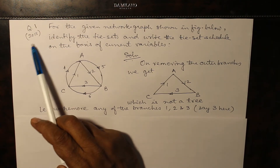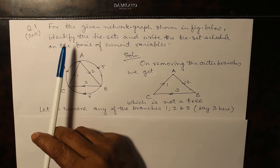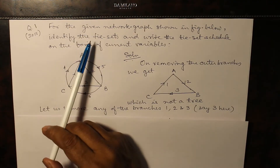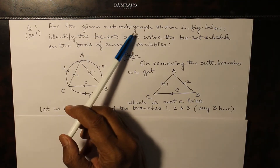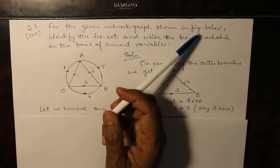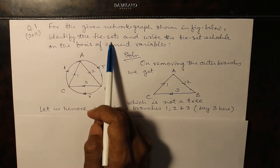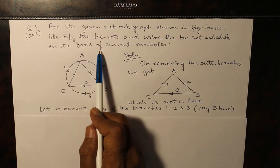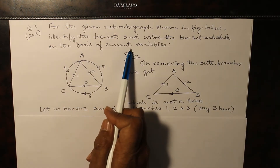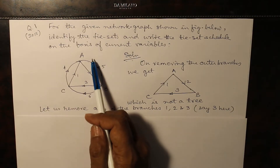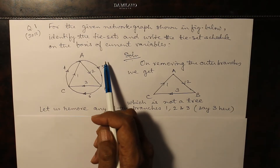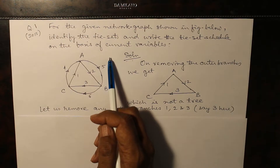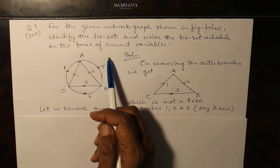In 2015, Nike University, this question was asked in N-TOM: for the given network graph, identify the tie sets and write down the tie set schedule based on the current variables. As you know, the meshes we are assuming correspond to the mesh currents done in mesh analysis in electrical technology of semester 1.